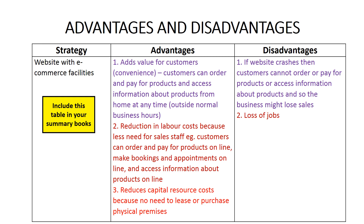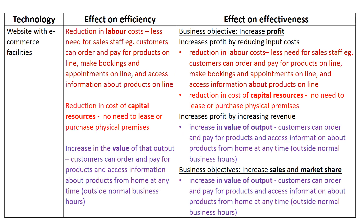A third advantage of a website with e-commerce facilities is that it reduces the cost of capital resources. A business which sells goods or services online doesn't have as much need for physical premises that customers can visit. In this way, the business saves the cost of buying or leasing bricks and mortar premises. For example, Amazon sells books online, so it doesn't need physical bookshops.